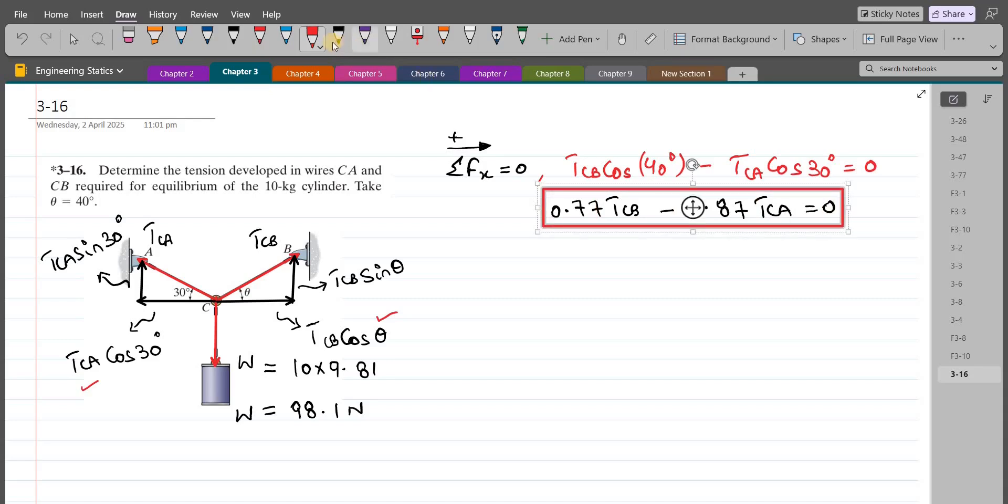Let's call this equation one. Now in equation one, we have two unknowns but we have a single equation, so we have to form another equation. My second equation is summation of forces in Y direction equals zero. I'm considering up direction as positive. So we have TCB sin 40 degrees plus TCA sin 30 minus the weight force, 98.1, equals zero.